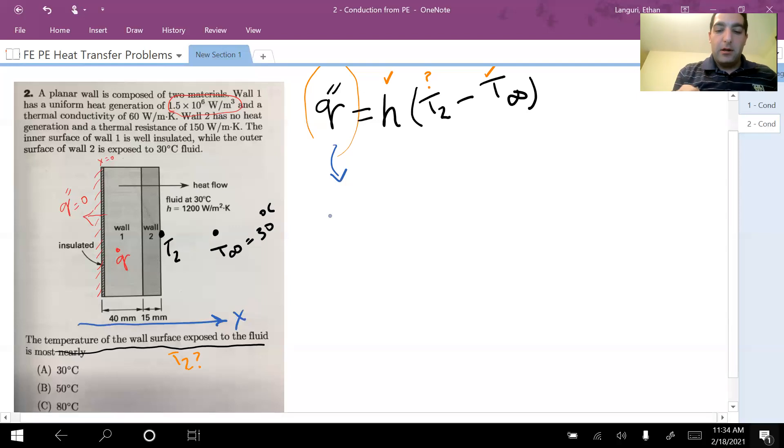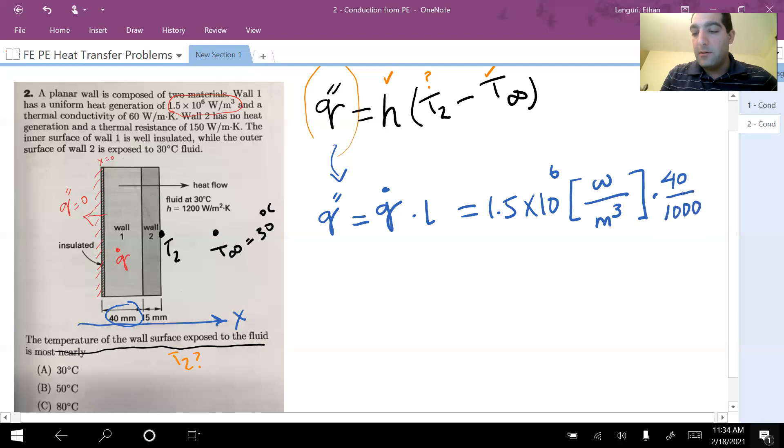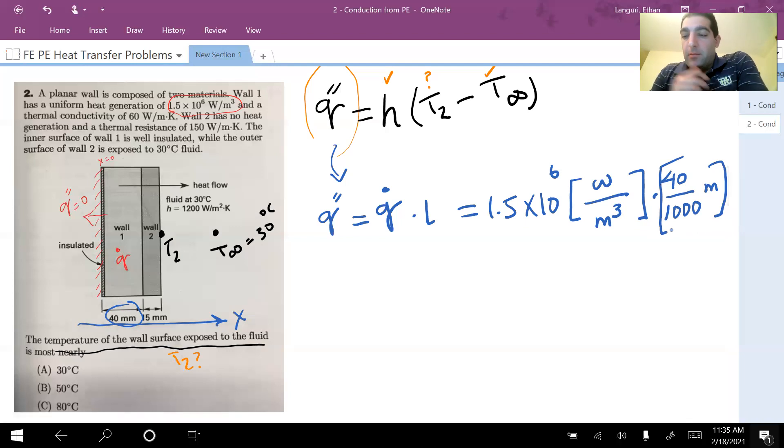So my q double prime is nothing but volumetric heat transfer times the thickness L. So in this case it's going to be 1.5 times 10 to the power of 6. Let's write down the unit so we can cancel out and make sure everything is perfect. So q dot times L is 40 millimeter. By the way, we have to make sure we put it in meters, right? So 40 millimeter you have to divide by 1,000 to have it in meter, because there are 1,000 millimeter in one meter.